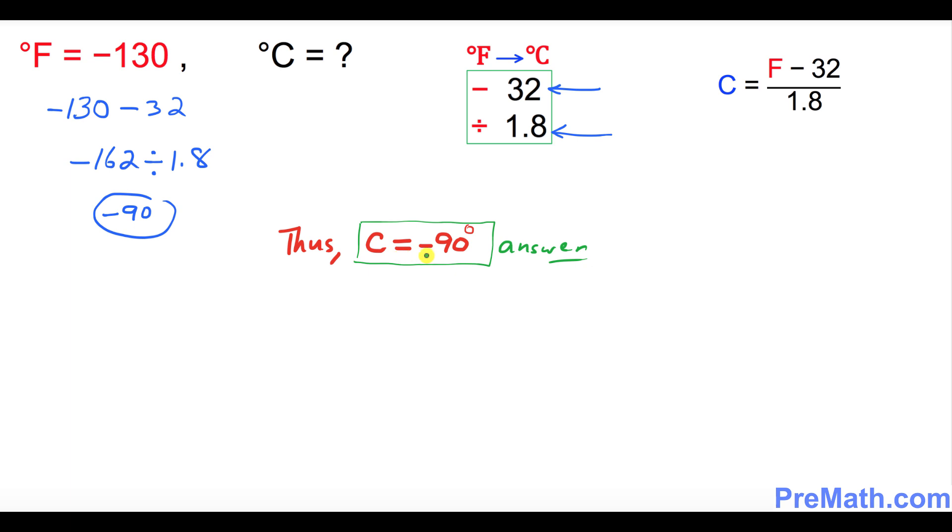So C equals negative 90 degrees is our answer. Thanks for watching and please don't forget to share and subscribe to my channel for more exciting videos.